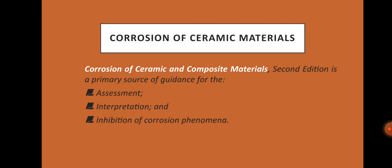Corrosion of Ceramic Materials: Corrosion of Ceramic and Composite Materials, Second Edition, is a primary source of guidelines for the assessment, interpretation, and inhibition of corrosion phenomena. The second edition covers the fundamentals of corrosion by gases, liquids, and solids of several ceramic materials, and includes a review of all current literature since the first edition. It explains existing corrosion problems and offers an excellent guide to the design and development of corrosion-resistant structures.